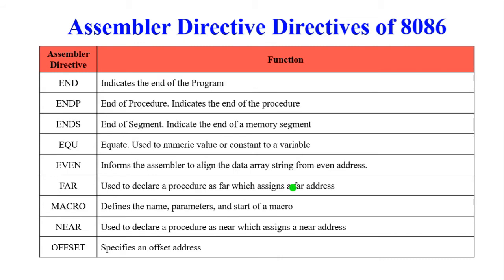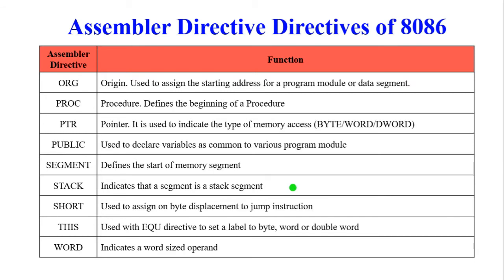Further directives include: END — indicates the end of the program; ENDP — indicates the end of a procedure; ENDS — indicates the end of a memory segment; EQU — equate, assigns a numeric value or constant to a variable; EVEN — informs the assembler to align data or arrays from an even address; FAR — declares a procedure as far, assigning a far address; MACRO — defines the name, parameters, and start of a macro; NEAR — declares a procedure as near, assigning a near address; OFFSET — specifies the offset address.